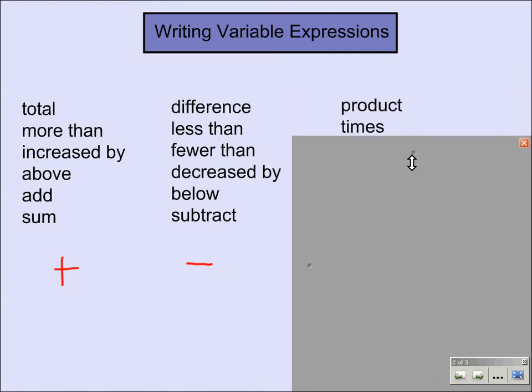This next group of words we're going to look at, product, times, twice. These words should all remind us of multiplication. Now I'm using an X right now to show multiplication, but you've also seen it as a dot. We prefer using the dot because an X kind of reminds us of a variable.